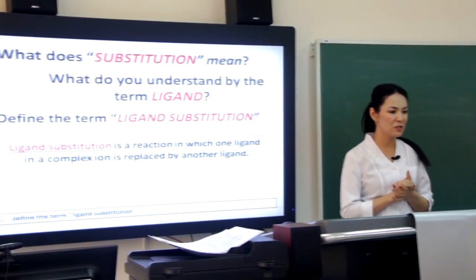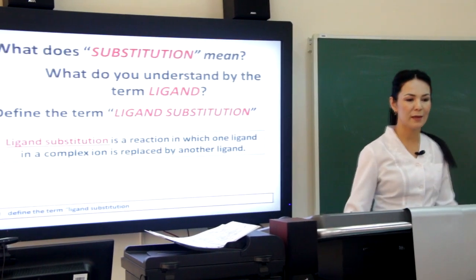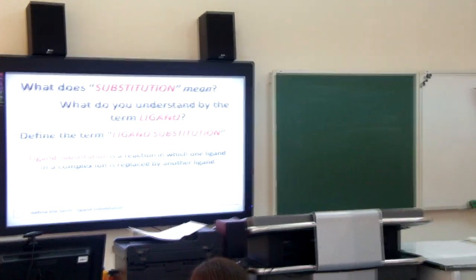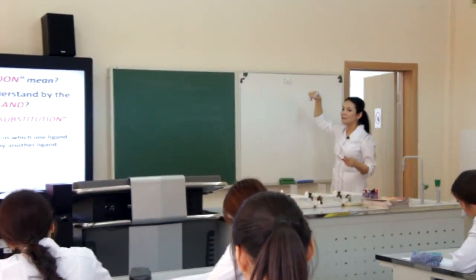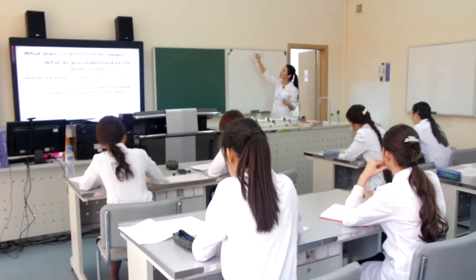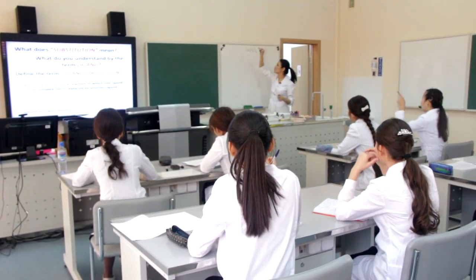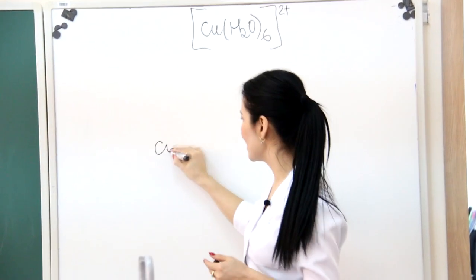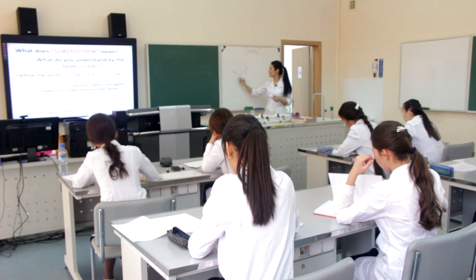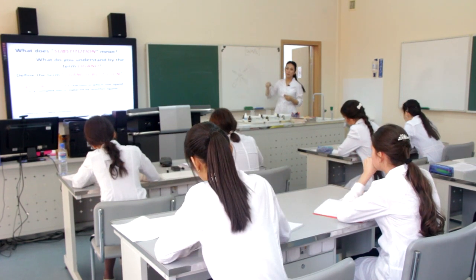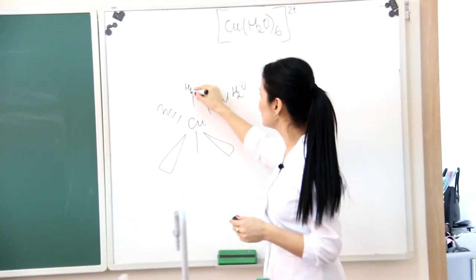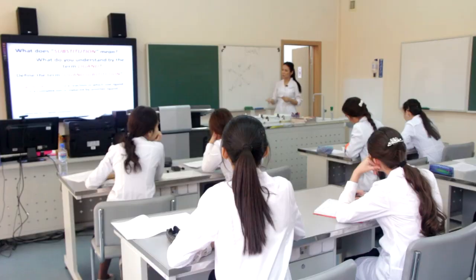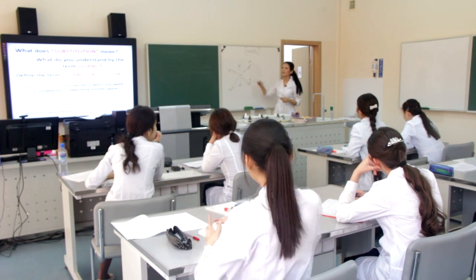Write down the definition in your copybooks. Can you give me an example of a complex ion? Copper — Cu(H2O)6 with a 2+ charge. What shape is this complex ion? Octahedral. Let's draw the octahedral shape with all six H2O molecules. If we replace one or two H2O with NH3, that is ligand substitution.